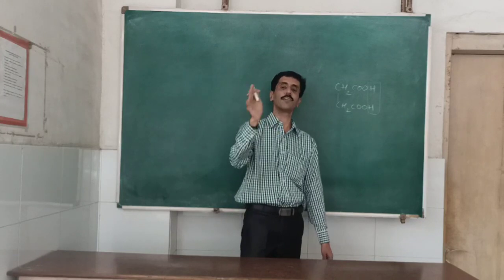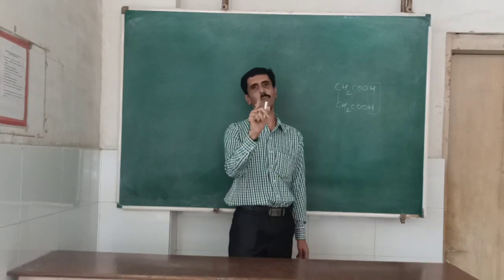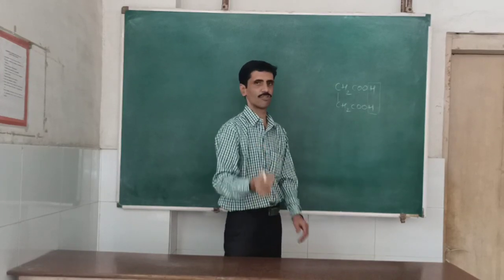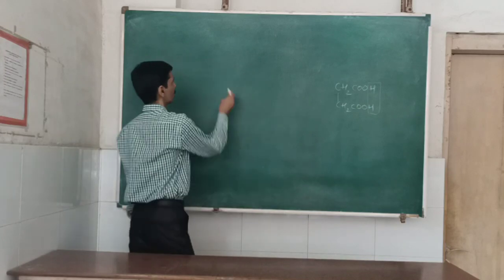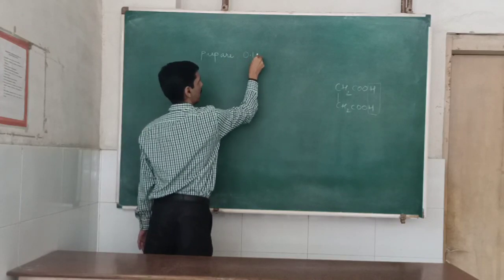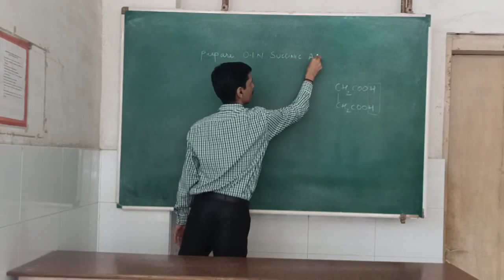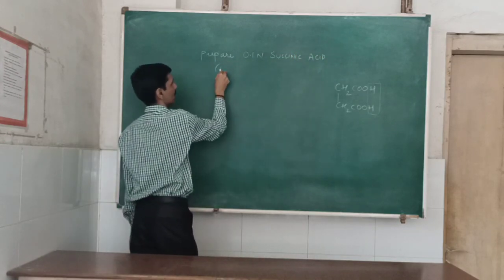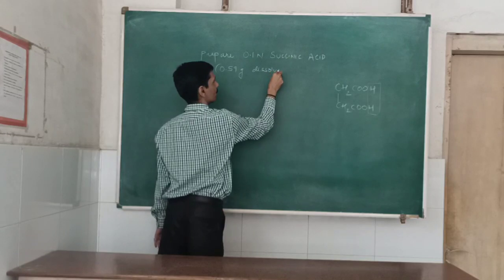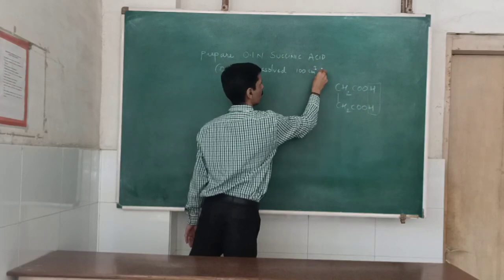So we are going to prepare 0.1 normal succinic acid. To prepare 0.1 normal succinic acid, we are going to take 0.59 grams in 100 ml, because 100 ml is sufficient for the titration process.